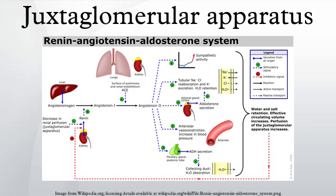The juxtaglomerular apparatus consists of the juxtaglomerular cells, the macula densa, and the lacis cells, also known as agranular cells.